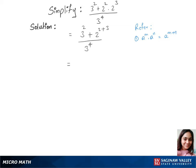Now we have 3 squared plus 2 to the power of 2 plus 3, which is 5, over 3 to the power 4.